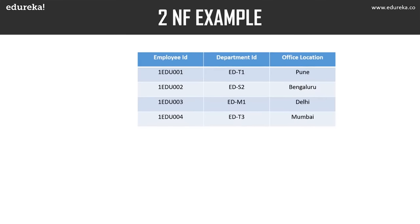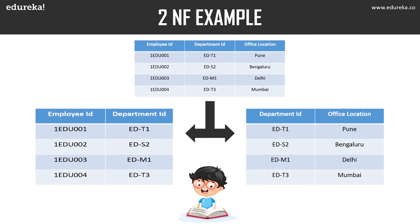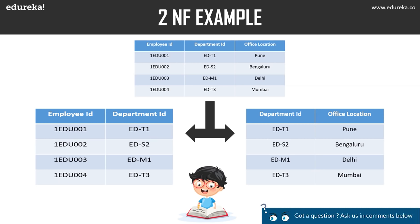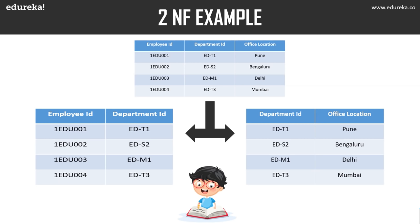To resolve this, we split the table into two parts. The first table has employee ID and department ID as columns. The second table has department ID and office location as columns. By doing this, we remove the partial functional dependency. Now office location is fully dependent on the primary key of its table, which is department ID. Second normal form is thus achieved.